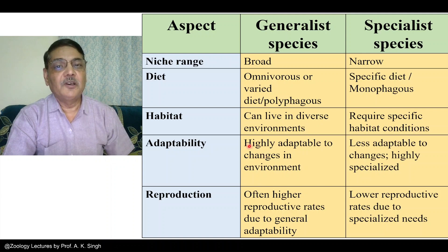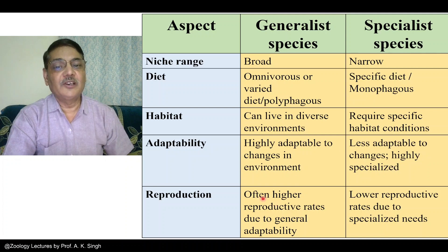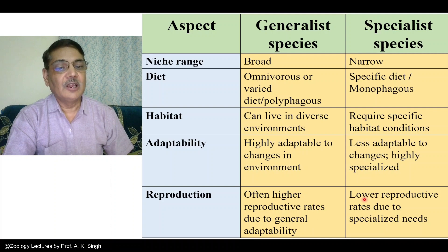Regarding adaptability, generalists are adapted to wide-ranging changes in the environment — they can tolerate a wide range of environmental variation — so they are highly adaptable, whereas specialists are less adaptable to changes and are highly specialized. Regarding reproduction, generalist species have high reproductive rates due to their general adaptability, whereas specialist species have lower reproductive rates due to their specialized needs.